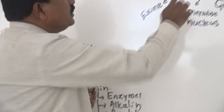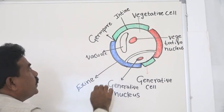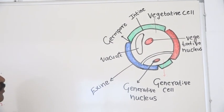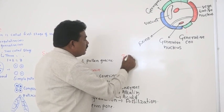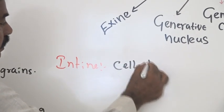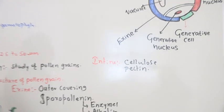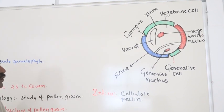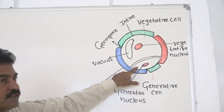This sporopolinin is absent in certain area. That area is called germ pore. Through that germ pore, pollen tube emerges during pollen grain germination. If you consider the inner layer, it is intine. It is made up of cellulose and pectin. Both together form cellulose-pectidase layer. Next to the intine, there is a presence of thin plasma membrane. Each pollen grain having two cells - one large vegetative cell and another small generative cell.